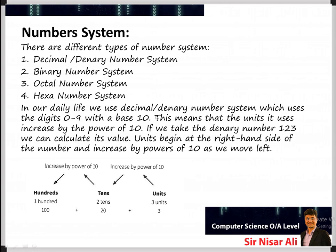In our daily life, among these four, we only use the decimal number system. All our calculations and mathematical work are done with decimal numbers, which have a base of 10. The digits range from 0 to 9 — that is 0, 1, 2, 3, 4, 5, 6, 7, 8, 9 — and all other numbers are developed from the collection of these digits.